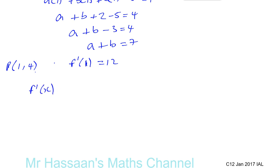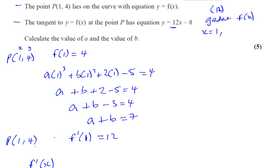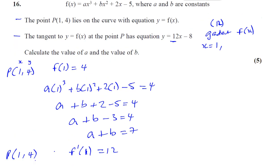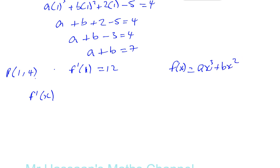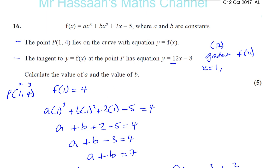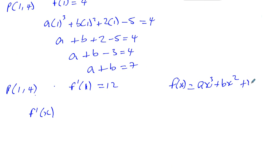So we have our function, which is ax³ + bx² + 2x - 5. So let's write that down. So f'(x), we need to differentiate ax³ + bx² + 2x - 5.